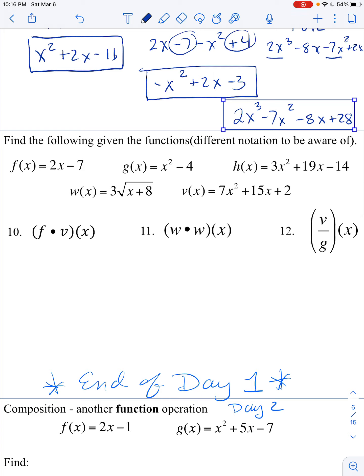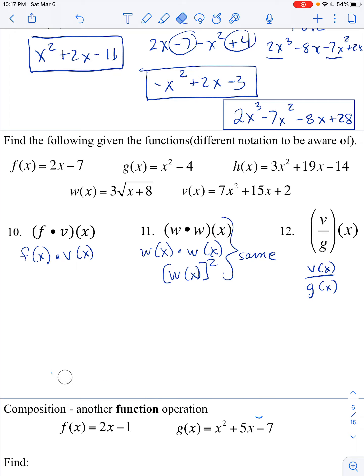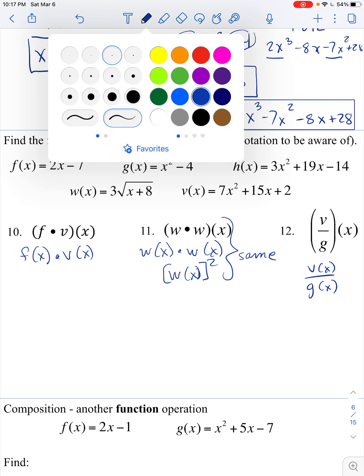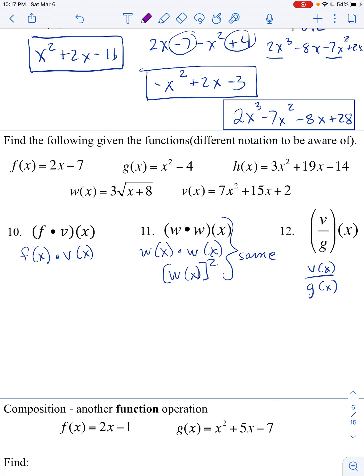One more round of practice, keeping in mind that, again, this notation, don't let this freak you out. It just means f of x times v of x. Here, this simply means w of x times itself. They could have also written it as w of x squared. All of these things mean the same, just different notation. It's probably not a terrible idea to try it on your own and then see if you and I are getting the same thing.